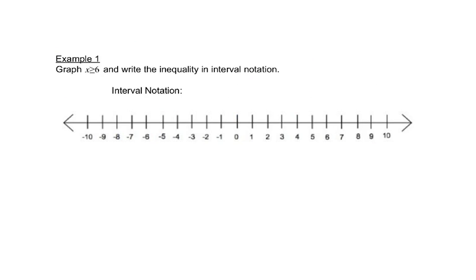Let's look at some examples. We're going to graph x is greater than or equal to 6 and write the inequality in interval notation. I always start with graphing. I look at the 6 right here, and this is opening to the right, which means we want numbers that are bigger than 6. So we're going to go this direction from 6. There's a line underneath it, so we use a bracket at that number.